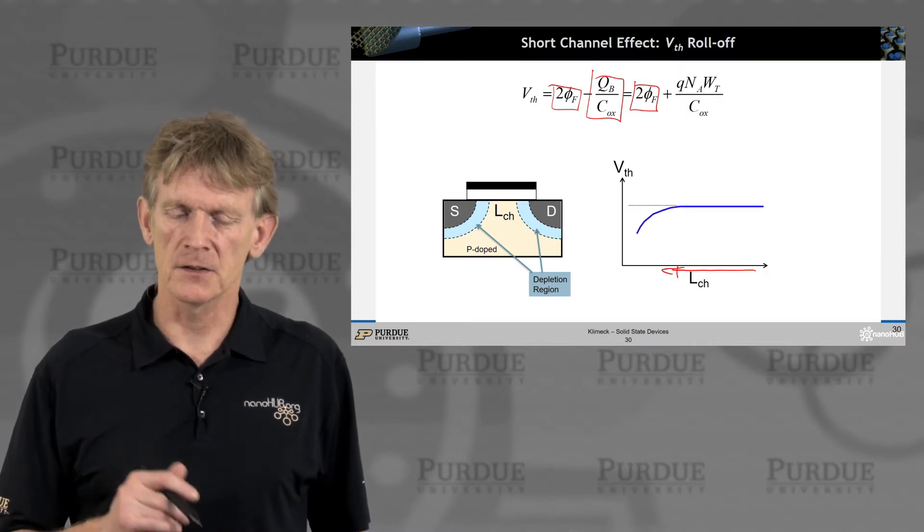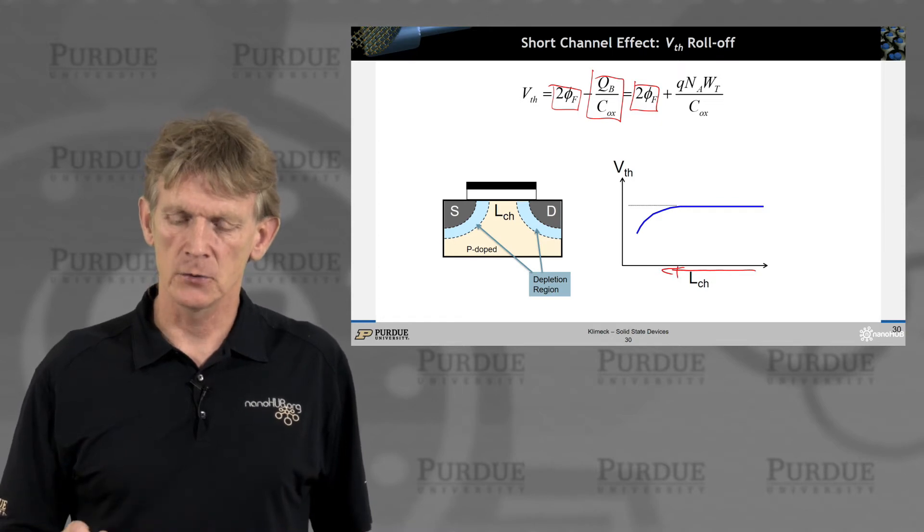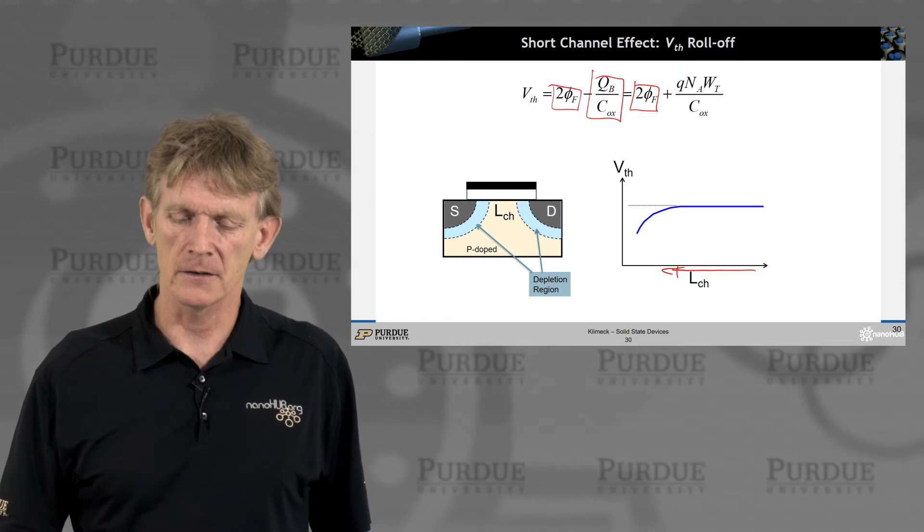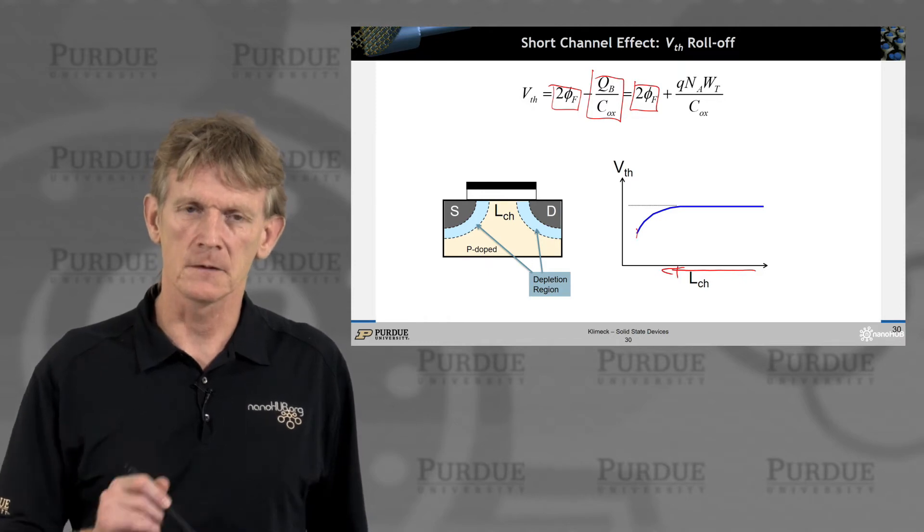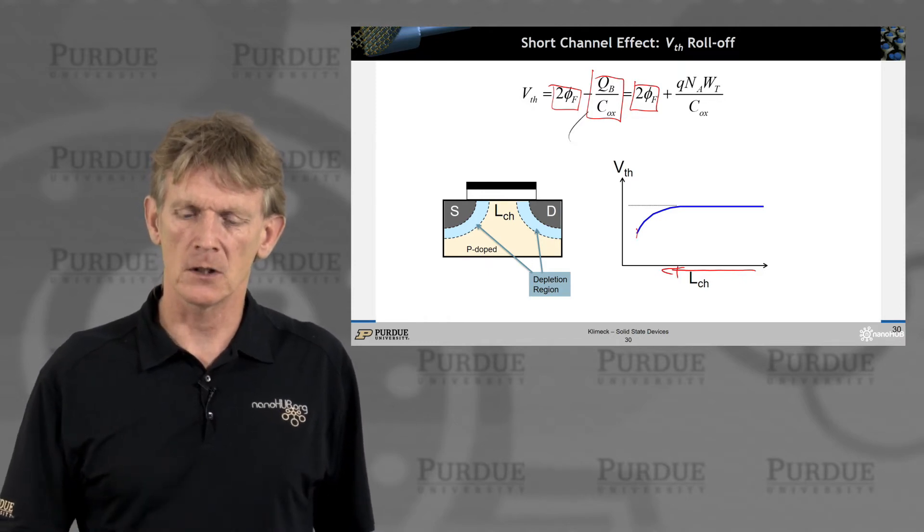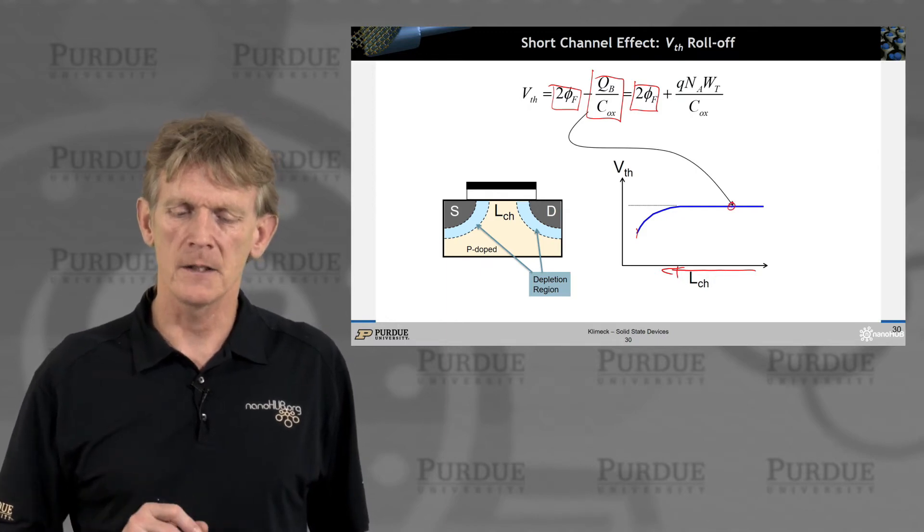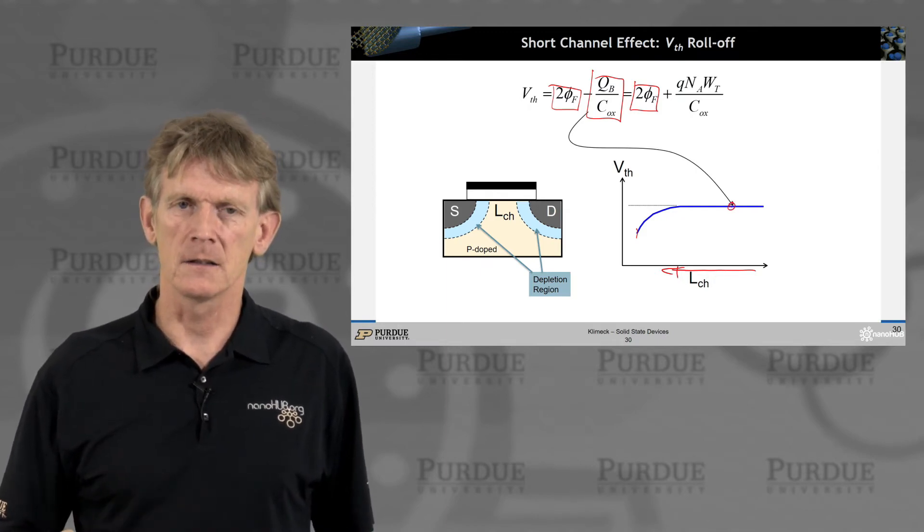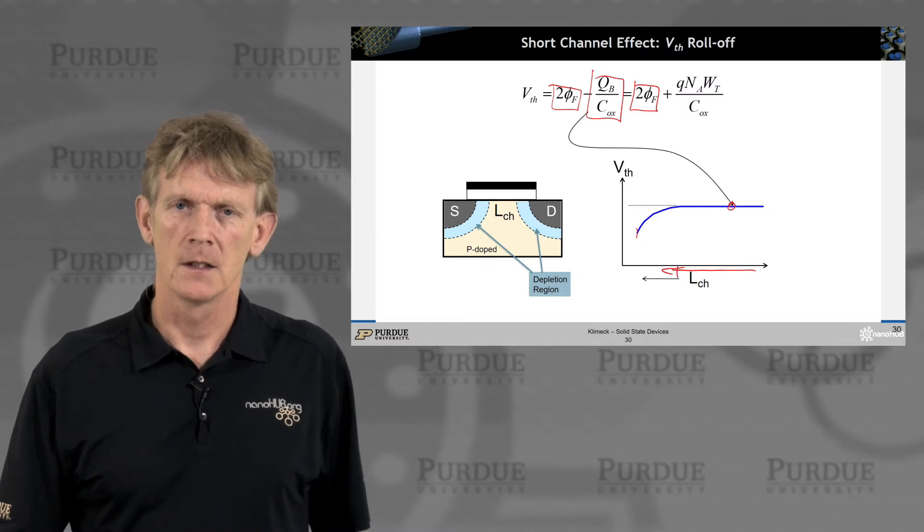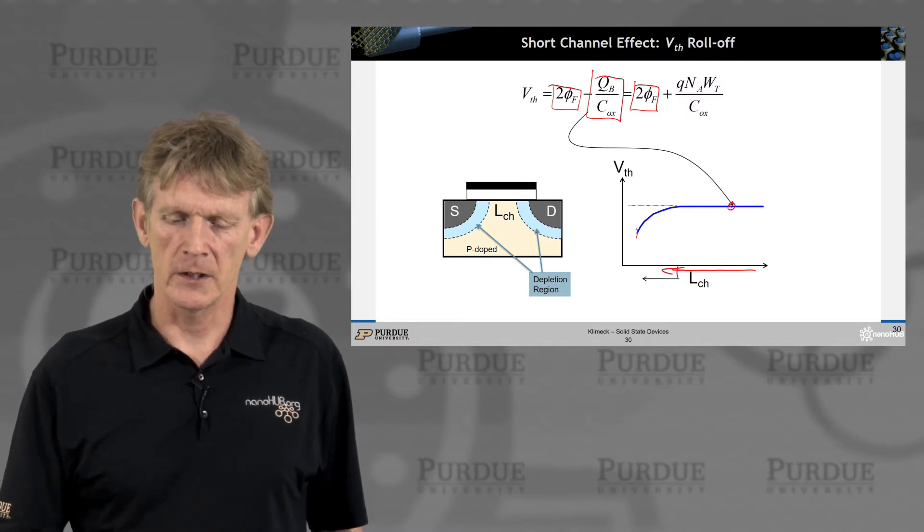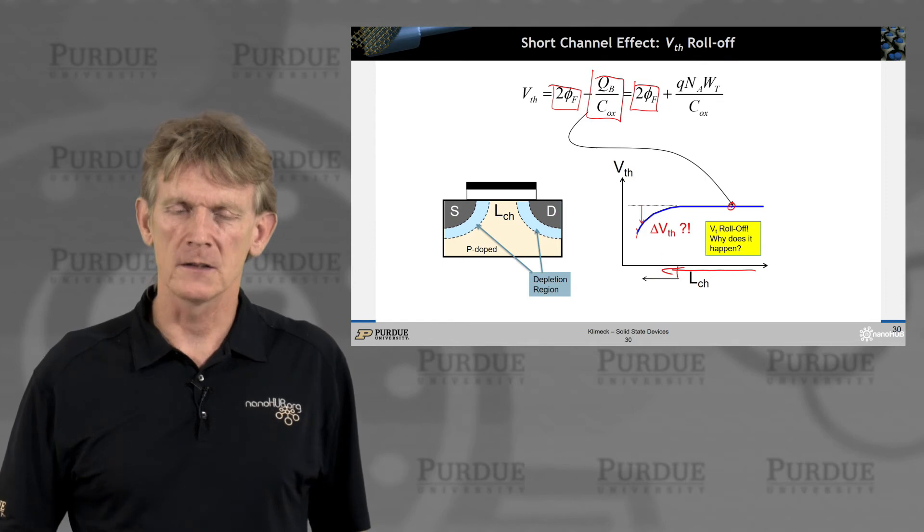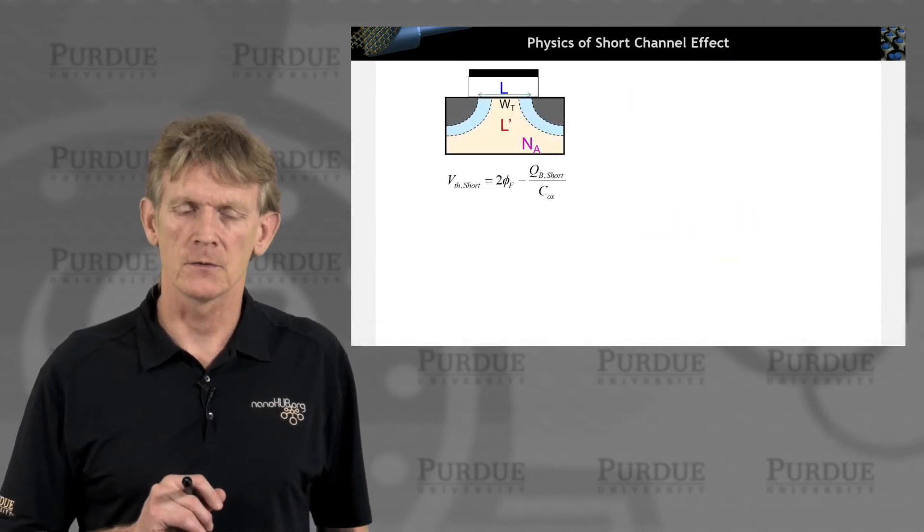What happens is that this threshold voltage, as you make the gate length or the channel length shorter and shorter, goes down. Let's talk about where this comes from. This is only valid way up here when the channels are long. Let's calculate some expressions where this threshold voltage roll-off comes from.